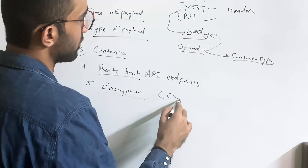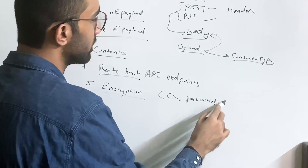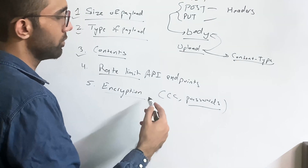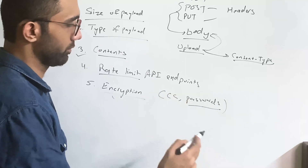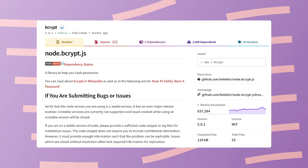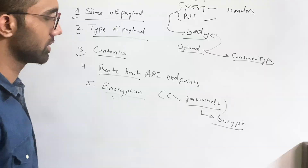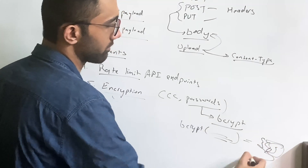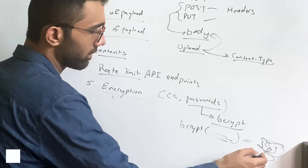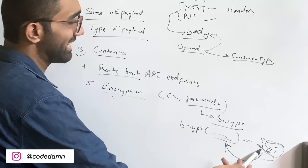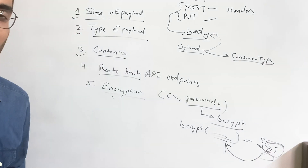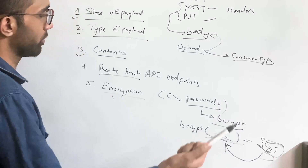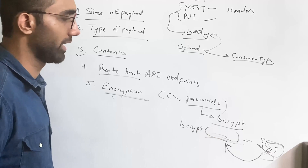The fifth tip is encryption of sensitive data. For anything involving credit cards, passwords, or other secrets, store this information very carefully. For passwords, you don't even need to encrypt — just hash them. bcrypt is a great library for this: it takes any input and produces a hash that cannot be reversed to derive the original password, so even if your database leaks, passwords remain protected.